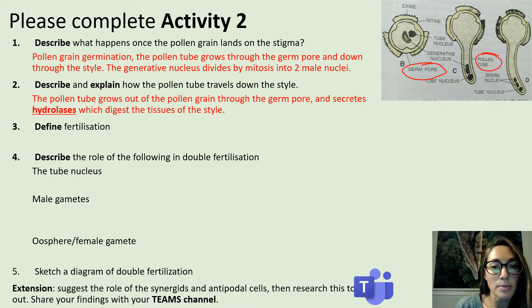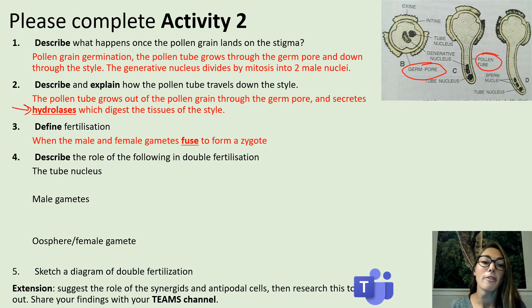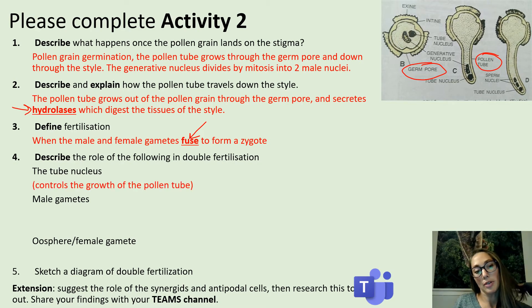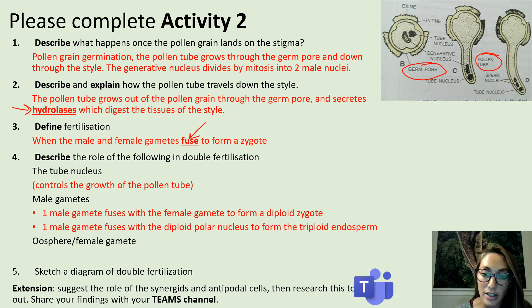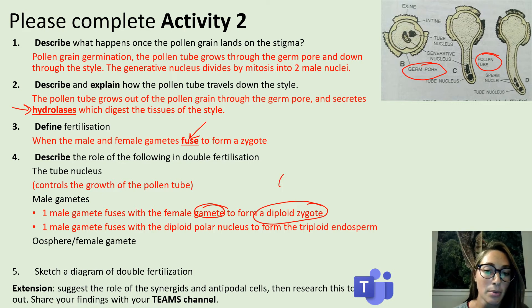Describe and explain how the pollen tube travels down the style: the pollen tube grows out of the pollen grain and secretes hydrolases — a key word for exam questions. The tube nucleus controls the growth of the pollen tube. One male gamete fuses with the female gamete (oosphere) to generate a diploid zygote. A key tip: always state the n number or ploidy (haploid or diploid) whenever discussing nuclei in human or plant reproduction.